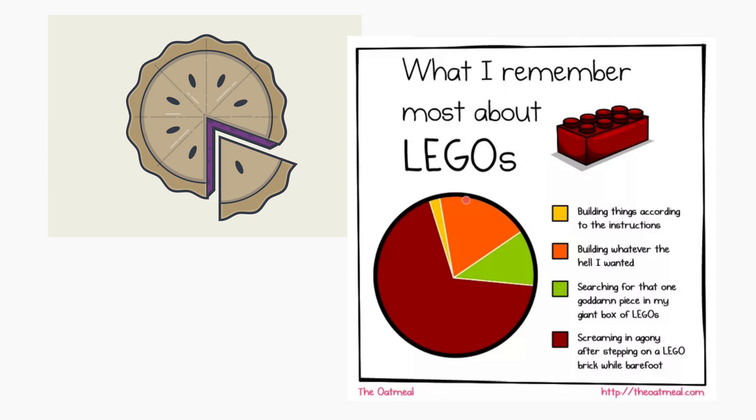Let's look at this interesting pie chart. What do I remember most about LEGOs? The big slice of pie here is when you scream in agony, something you remember most after stepping on a LEGO. The smallest piece of pie here is the yellow color, which is building things according to instructions. This is how you would look at a whole composed of small parts. This big piece here has a larger angle and it is proportional to that data value, which is a lot of people remember screaming after stepping on a LEGO.